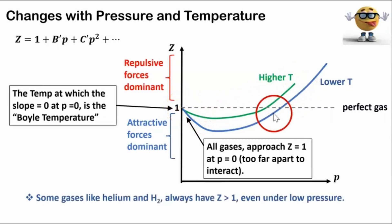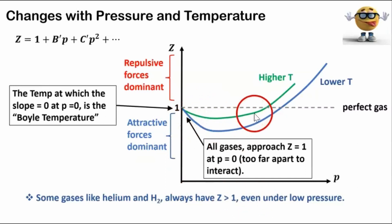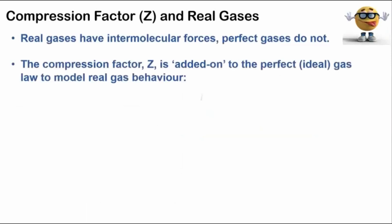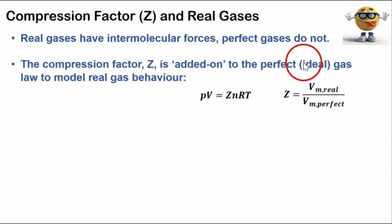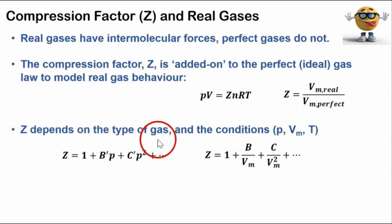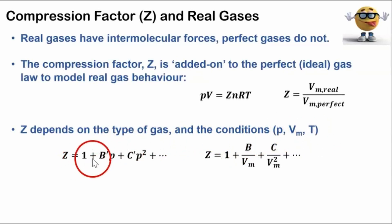Note that this curve doesn't look the same for all gases. Some gases like helium and hydrogen always have a compression factor greater than one, so the curve has the same general shape but never dips below one. To summarize: real gases have intermolecular forces while perfect gases do not. The compression factor Z is an add-on to the ideal gas law to model real gas behavior. The equation for Z is the molar volume of the real gas divided by the molar volume it would have if it were perfect. The compression factor depends on the type of gas and the conditions — pressure, molar volume, and temperature.